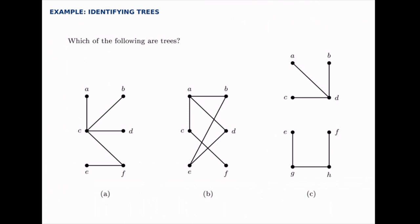So if there are no simple circuits, that means you can't loop back around so you don't have extra edges to use. Very quickly, we can tell that C is not going to be a tree just because it's not connected. So that one's not a tree because it's disconnected.